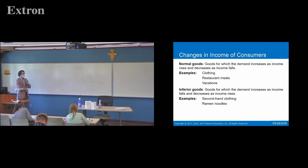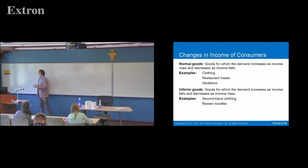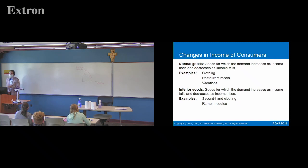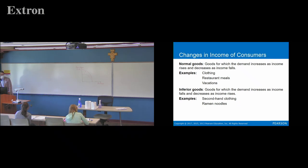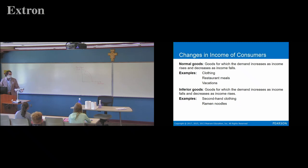Then there's another type called inferior goods. For inferior goods, your demand increases when your income falls — the exact opposite of normal goods. As your income rises and you get a better job, your demand for inferior goods decreases. Examples are secondhand clothing and ramen noodles. You may eat a lot of ramen now because you're in college and don't have much income, but when you graduate and get a decent job, you don't have to eat ramen anymore — you can go out to eat at restaurants. Similarly, I still buy a lot of clothing secondhand because it's much cheaper, but the Evansburg Goodwill is a goldmine.